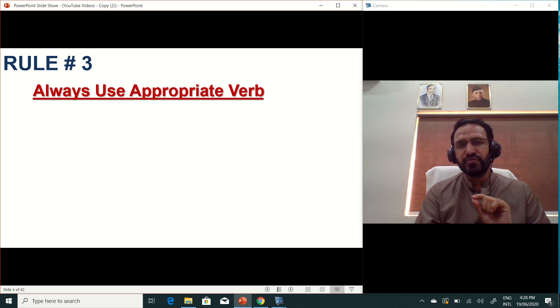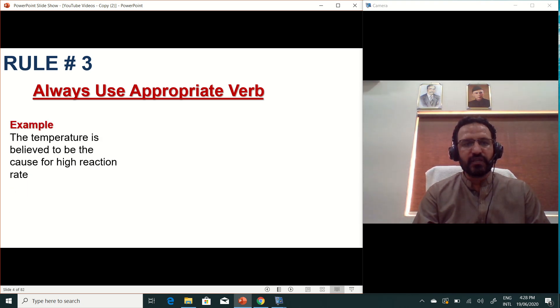Rule three: always use appropriate verb. I have seen and I have reviewed several research papers and review papers and I have seriously observed that people, especially the students, MS students and PhD who are submitting their first research paper, they avoid verb. I don't know why. Verb actually gives the strength to your sentence and actually clarifies what you want to say.